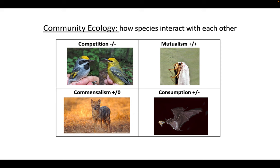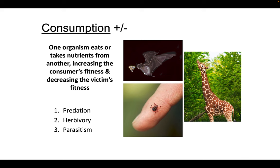The fourth interaction is called consumption, where one species consumes the other. We can break consumption into three types: predation, herbivory, and parasitism. Herbivory is the consumption of plants. Predation is the consumption of some sort of consumer — primary or secondary. Parasitism is where one species doesn't fully consume the other, but takes resources from it, typically by living within the host species or drawing blood from the host.